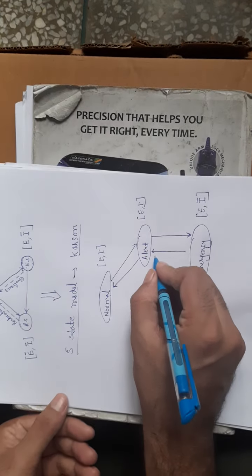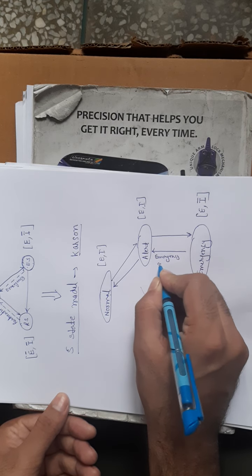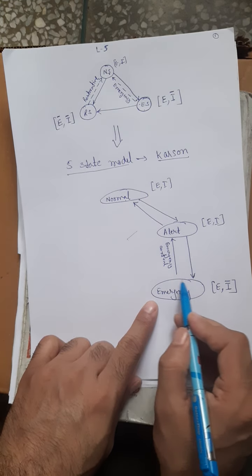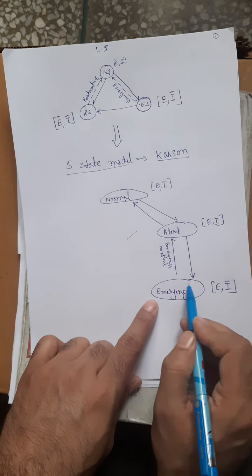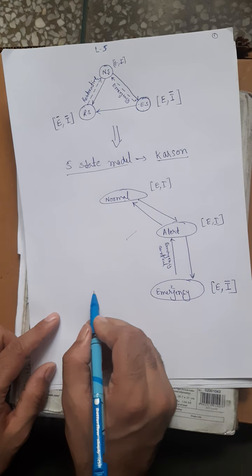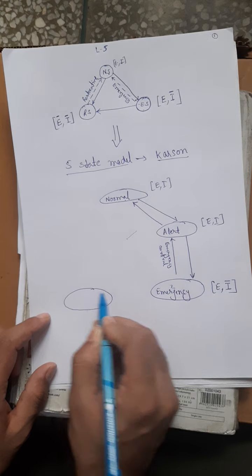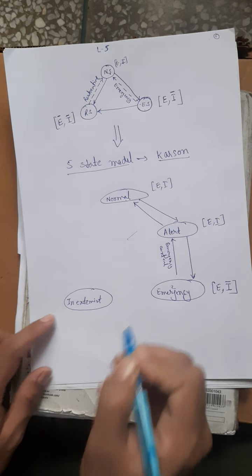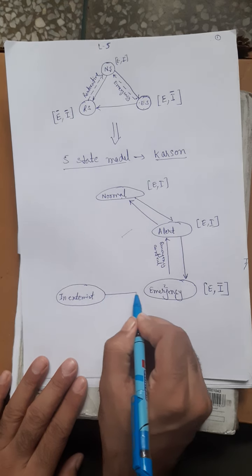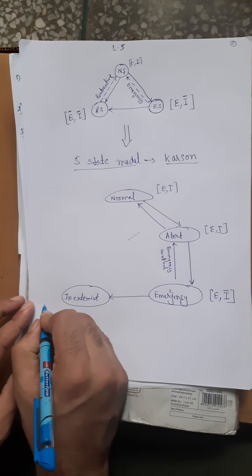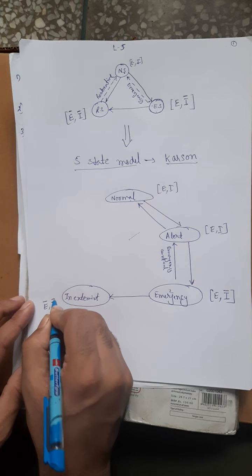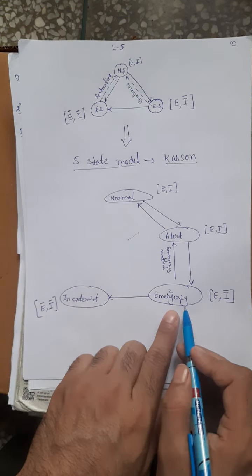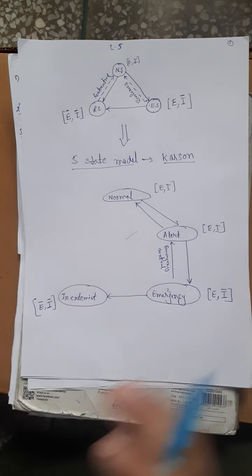To bring the system back from emergency to alert state, emergency control is used. If disturbance continues in the emergency state, the system moves to the extreme state — also called in extremis — where both equality and inequality constraints are violated.